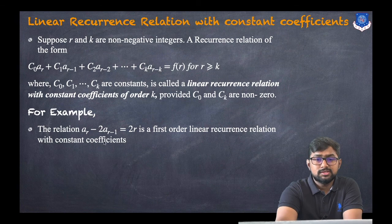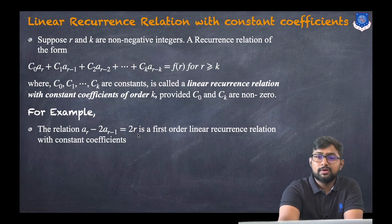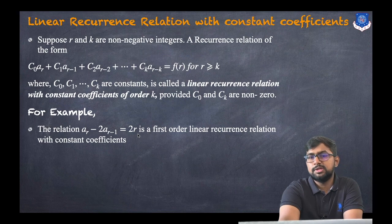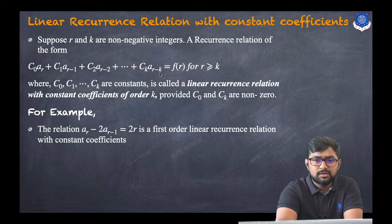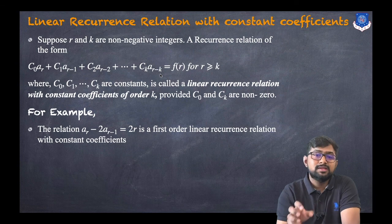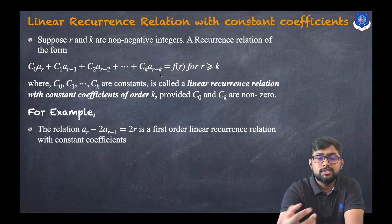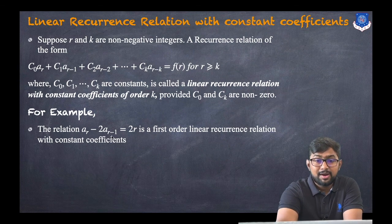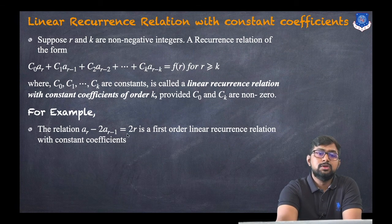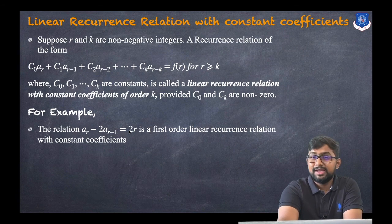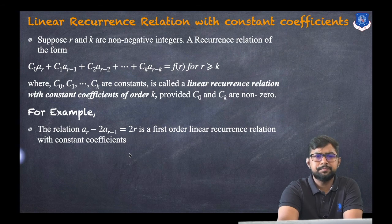Note that c_0 and c_k — the first and last terms — must be non-zero, otherwise it won't work. For example, the relation a_r - 2 * a_{r-1} = 2^r is a first order linear recurrence relation with constant coefficients. Comparing with r - k, we have r - 1, so k = 1, hence it is first order.